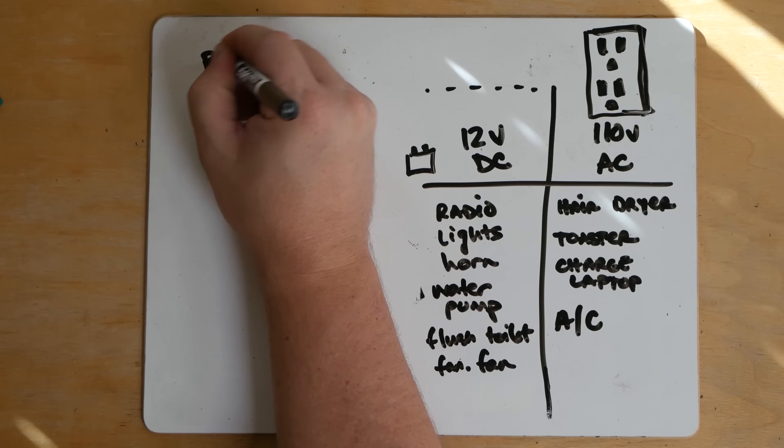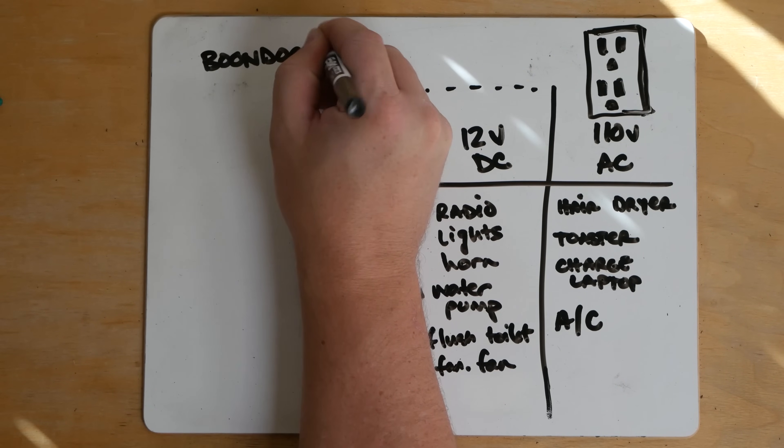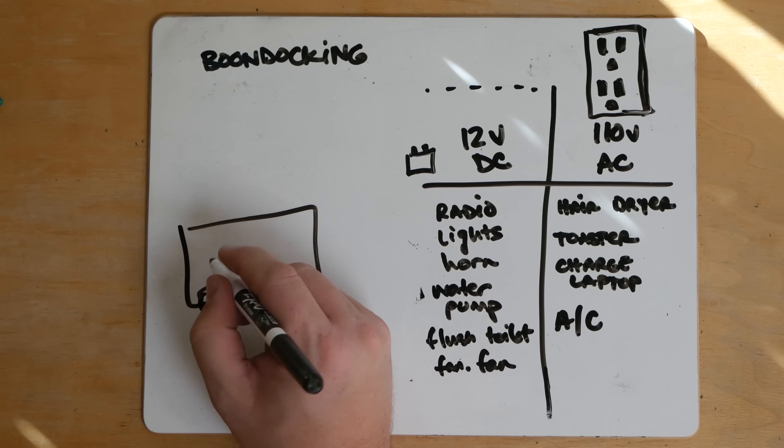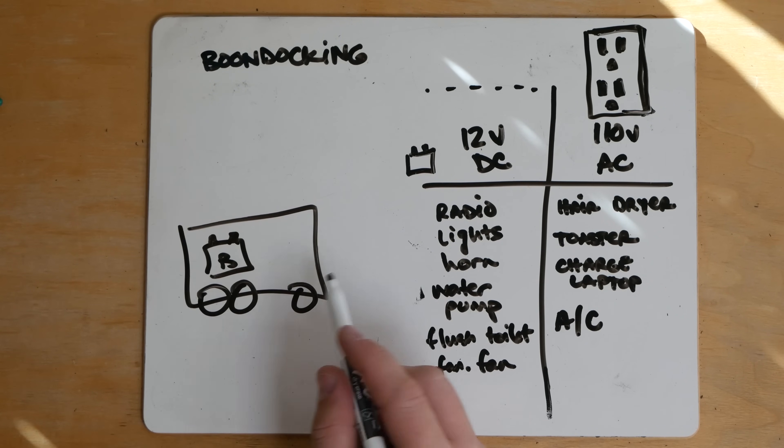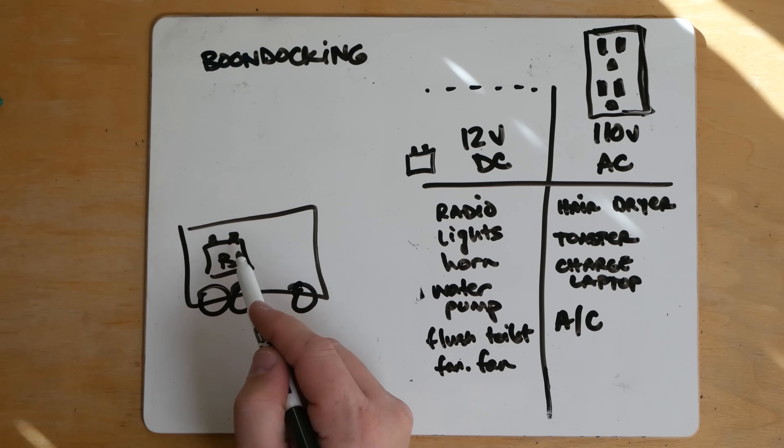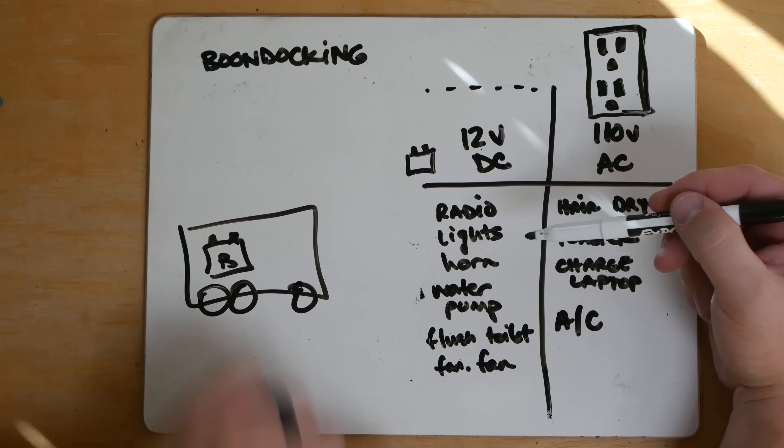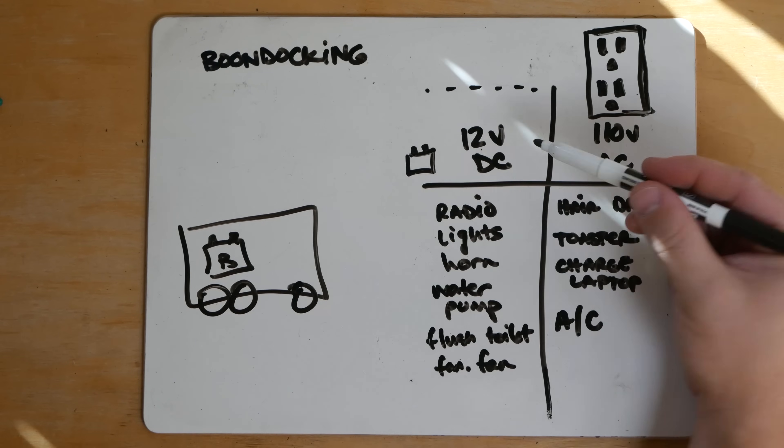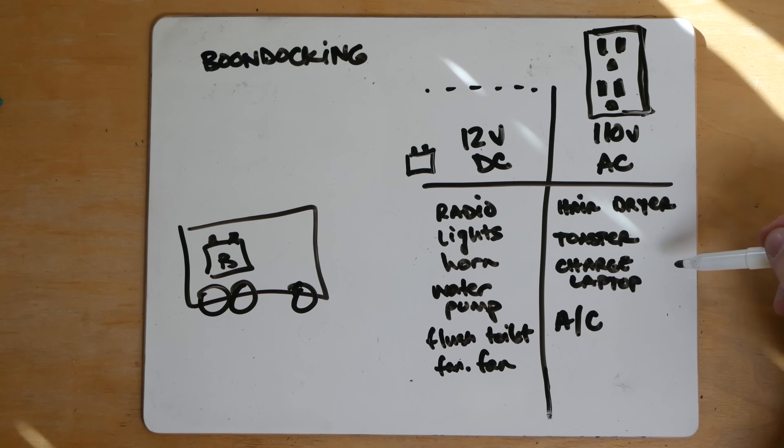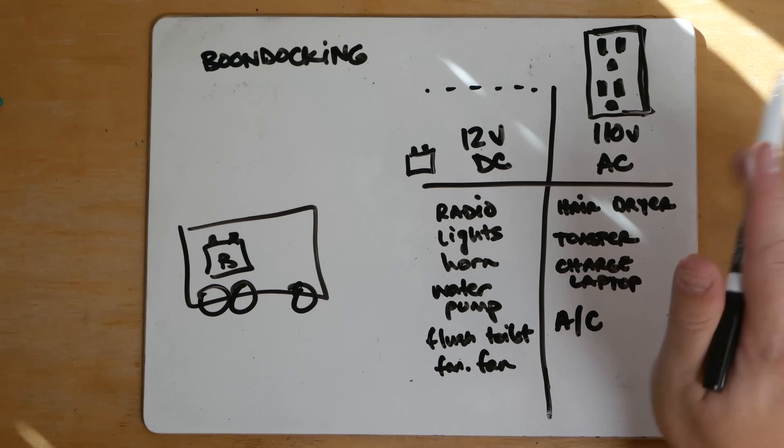Let's say you're boondocking now. And that's what I call camping on a dirt road where you're not plugged into anything. You got your RV which has a 12 volt battery. So you get there and all you can do is radio, lights, water pump, flush the toilet, run your fantastic fan, basic 12 volt systems. You're not going to be able to charge your phone on the wall. You're not going to be able to run a toaster. You're not going to be able to run your hair dryer. You can't do any of that.